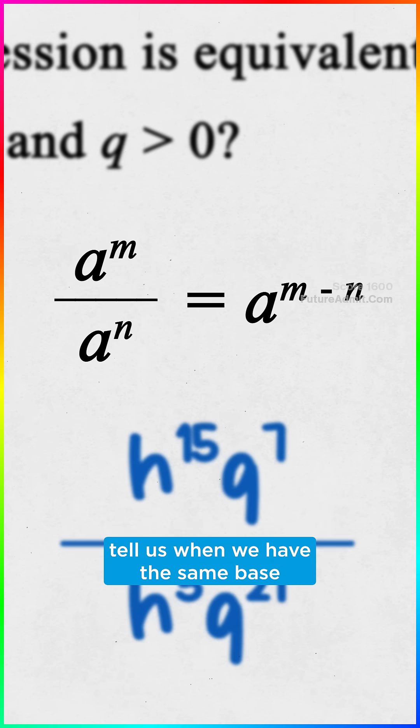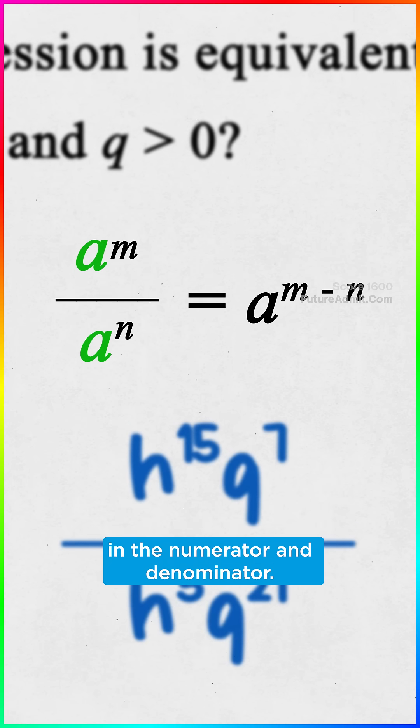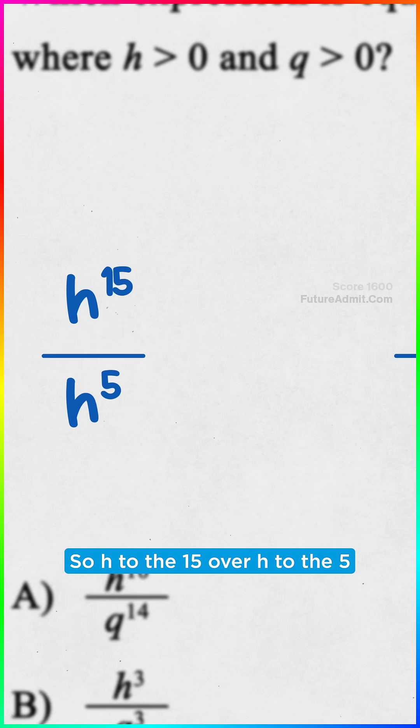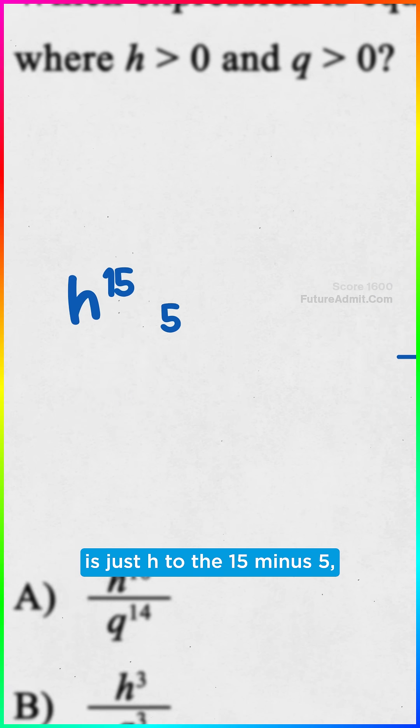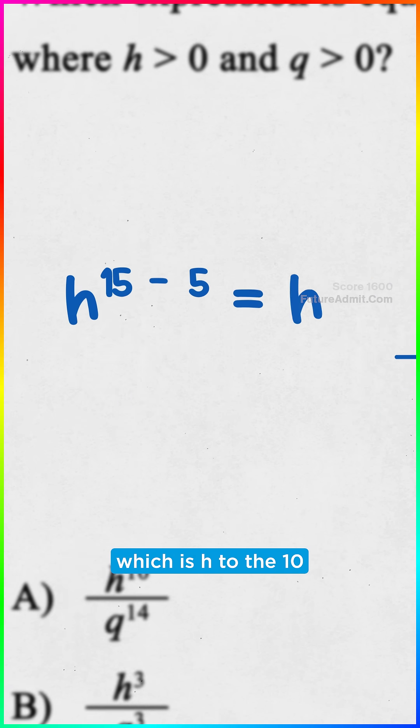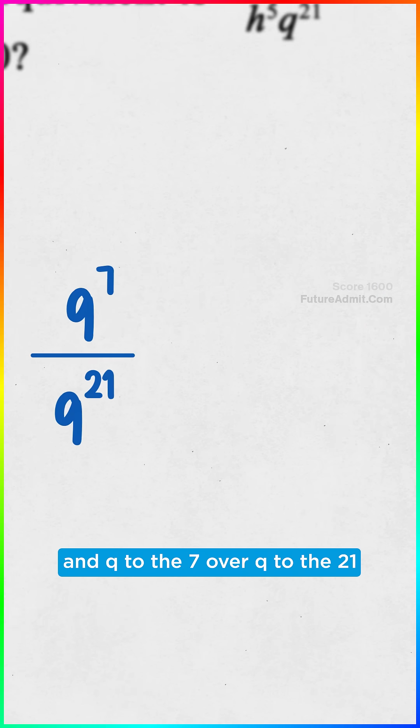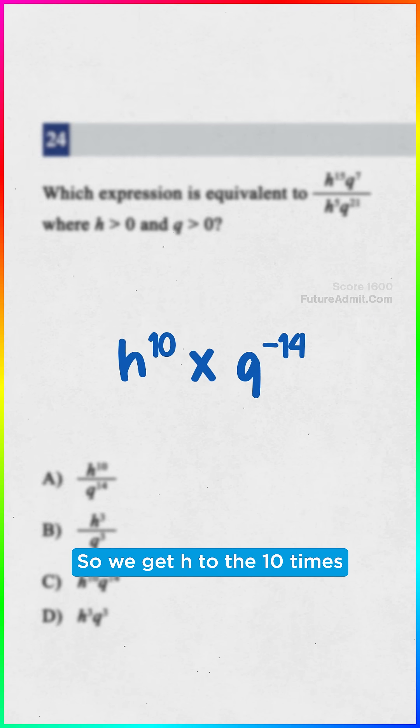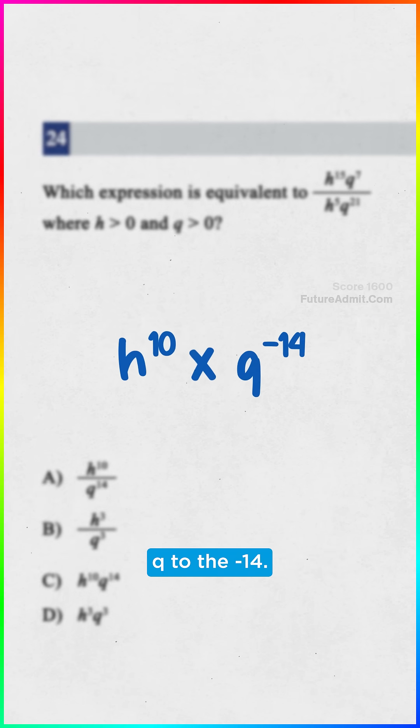Wait, our exponent rules tell us when we have the same base in the numerator and denominator, we can subtract the exponents. So h to the 15 over h to the 5 is just h to the 15 minus 5, which is h to the 10. And q to the 7 over q to the 21 is just q to the 7 minus 21, which equals q to the negative 14. So we get h to the 10 times q to the negative 14.